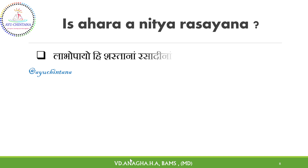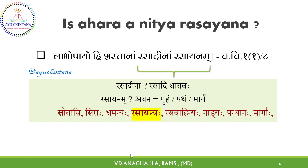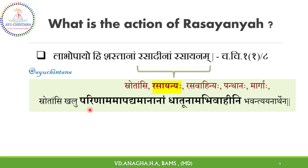The benefit of consuming Rasayanas is to impart rejuvenating action to Rasadhi Dhatus. But what is Rasayanam? Ayanam means Griham — Home. Patham or Margam means Path. Shrothis has a synonym called Rasayanyaha and also Rasavahinyaha. Shrothamsi Parinamam Apadyamana naam dhatu naam abhivahini bhavanti ayana rthena — Shrothis are pathways or platforms for the passage and movement of transforming Dhatus, as explained in Sharika Vimana 5. Thus, Rasayanyaha and Rasavahinyaha are the pathways for effective transformation and transportation of Dhatus.